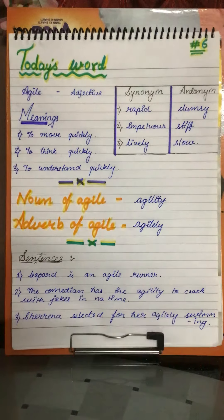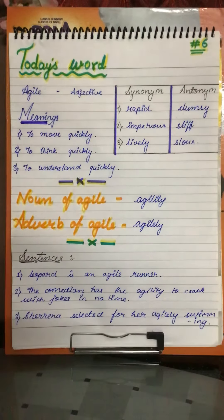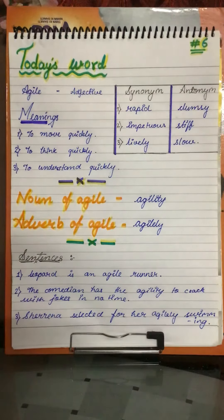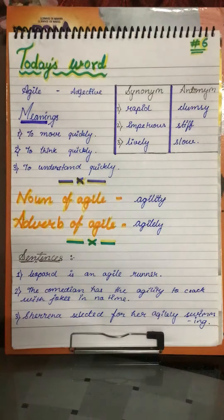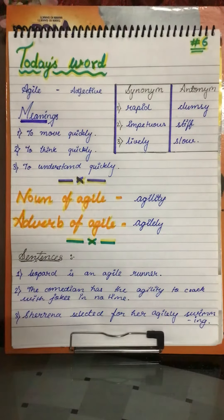An example of clumsy, slow and stiff is a turtle or tortoise. The noun form of agile is agility. The adverb form of agile is agilely.